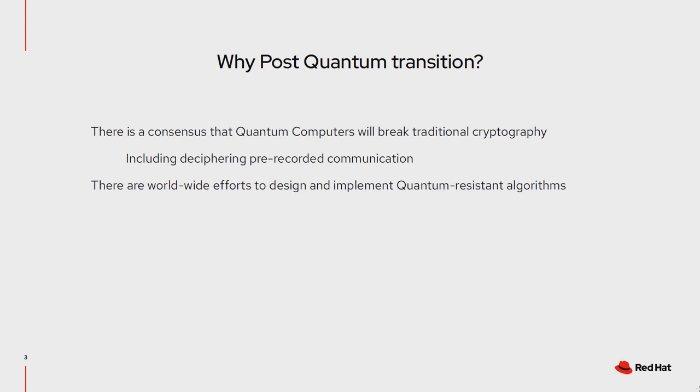Nobody knows when will quantum computers arrive - people called fusion, superconductivity and many other things would happen in the nearest 20 years for almost half a century. But if quantum computers are invented, it means that, for example, pre-recorded sessions can be deciphered and all the secret transmitted currently becomes available.